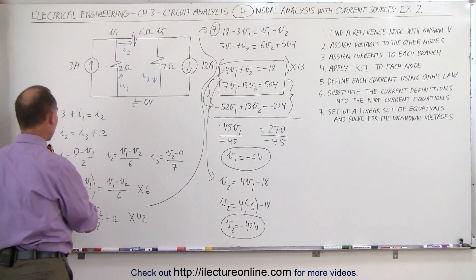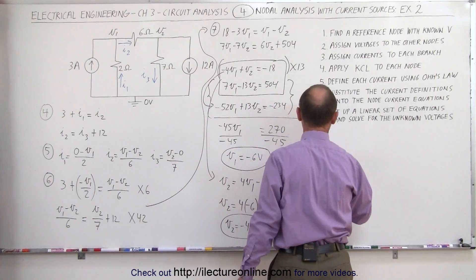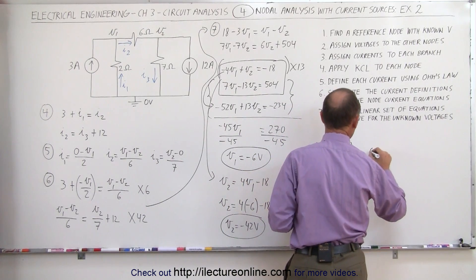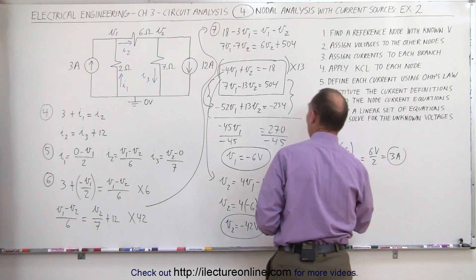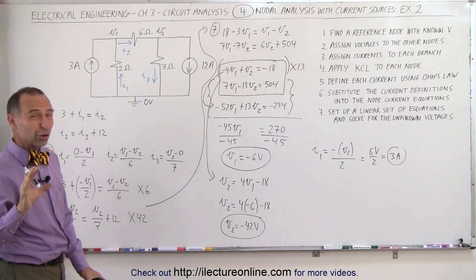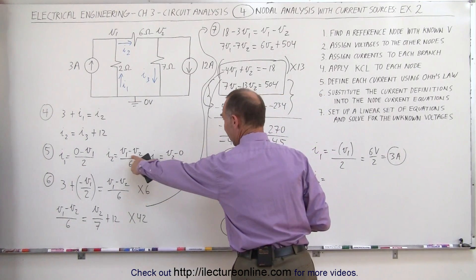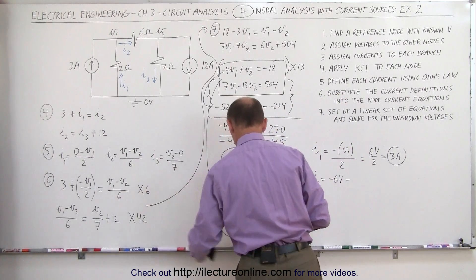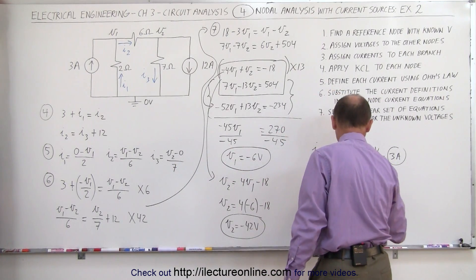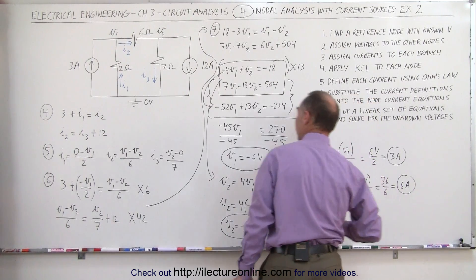All we have to do now to find the currents is to simply go ahead and substitute these back in. Let's just work out one of them. I1 can be found by taking the negative of V1 and dividing it by 2. V1 is at minus 6 volts. That's a plus 6 volts divided by 2, which is equal to 3 amps, which means that I1 is at 3 amps. While we're at it, let's do the others because that gives a good check to see if we did everything correctly. I2 is equal to V1 minus 6 volts minus V2, and V2 is a minus 42 volts, dividing that by 6. That's a plus 42 minus 6, that's 36 divided by 6, which is equal to 6 amps. I2 is equal to 6 amps.